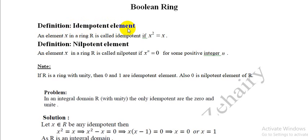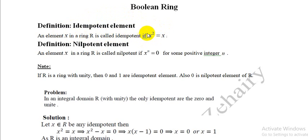Idempotent element: An element x in a ring R is called idempotent if x squared equals x. So the idempotent element satisfies the condition x² = x.